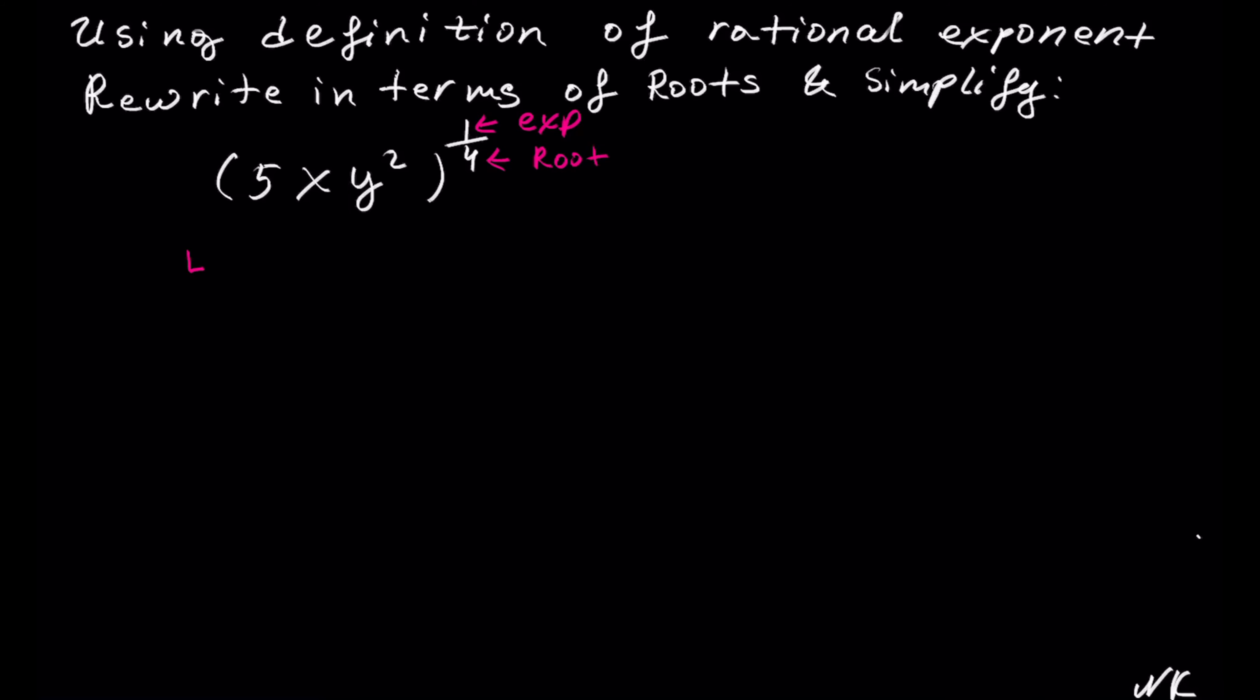So we get fourth root of 5xy to the second. We do not have any exponents that can cancel out with the fourth root, so fourth root of 5xy to the second is our solution.